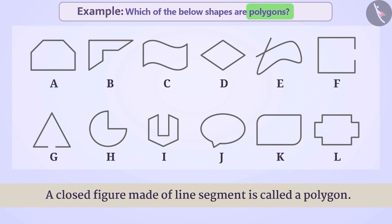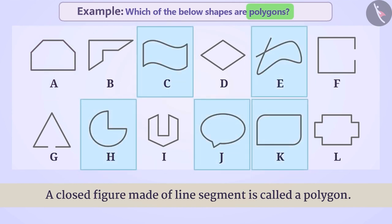Here we see that figures C, E, H, J and K are not completely made of line segments. Rather, these are made with curved lines.